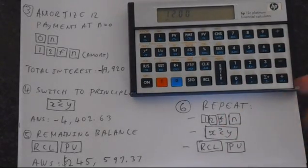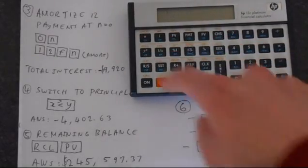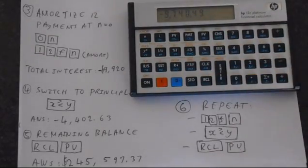So we can do the same to get at the end of the second year. So if we press 12, function, amort, we get this value. XY, we can see what the principal paid back is. This is increased because we've paid some of the loan, our interest costs are lower.